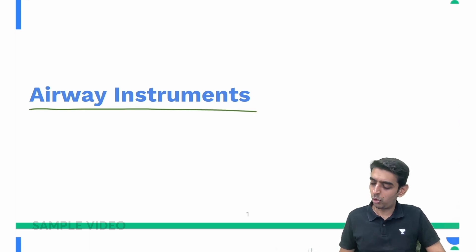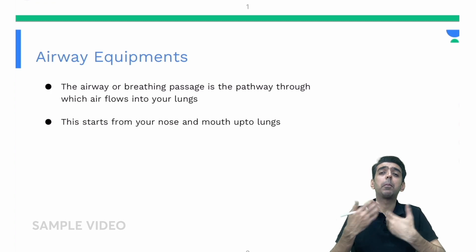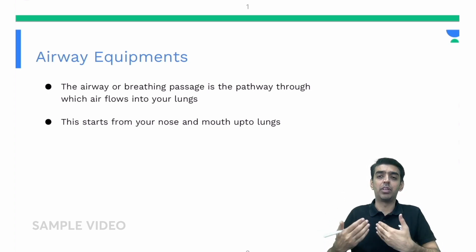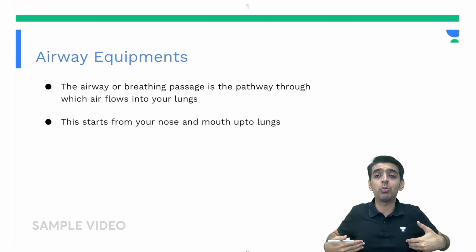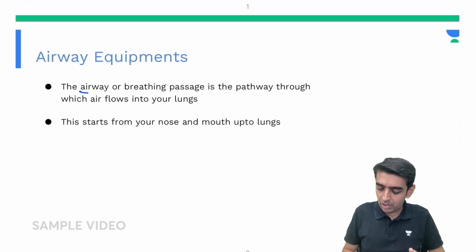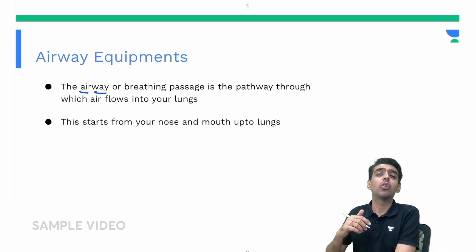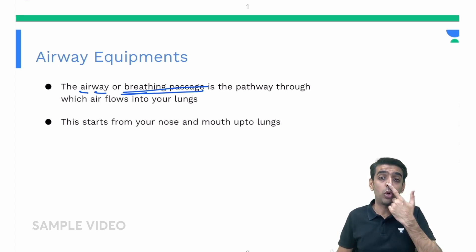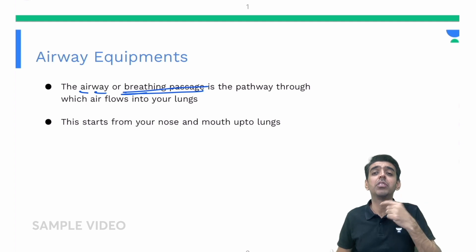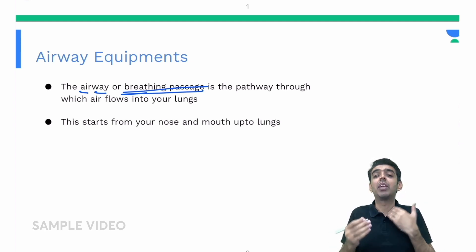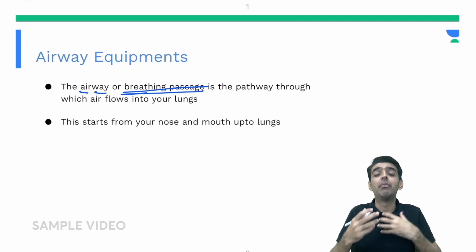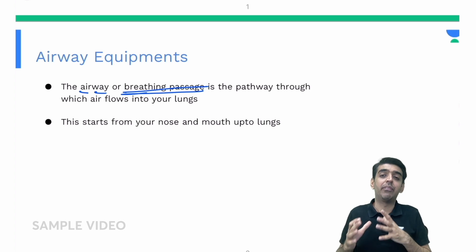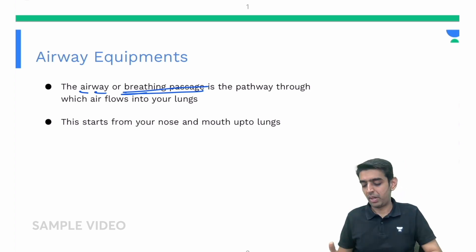First, what do we mean by airway? Airway is nothing but a breathing passage — the passage through which air flows. It starts right from your nose or mouth and goes all the way to the lungs. Any equipment that goes in this passage and helps us in maintaining the patency of the airway, whether for upper airway obstruction, intubation, or ventilation, is included under airway instruments.